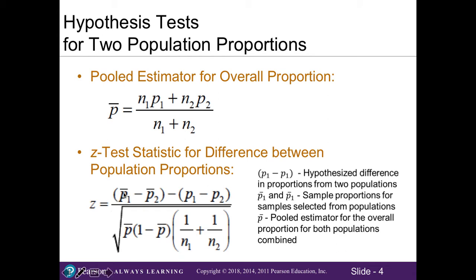In the numerator, we have our sample proportions subtracted from each other. Note that the population proportions here represent our hypothesized difference, which in this chapter is zero — we just want to know whether or not there's a difference. In the denominator, this is our standard error, where the pooled estimator gets plugged in. So be careful: p̂₁ is the sample proportion of the first sample, p̂₂ is the sample proportion of the second sample, the hypothesized value is zero, and p-bar is the pooled estimator found using the formula above.